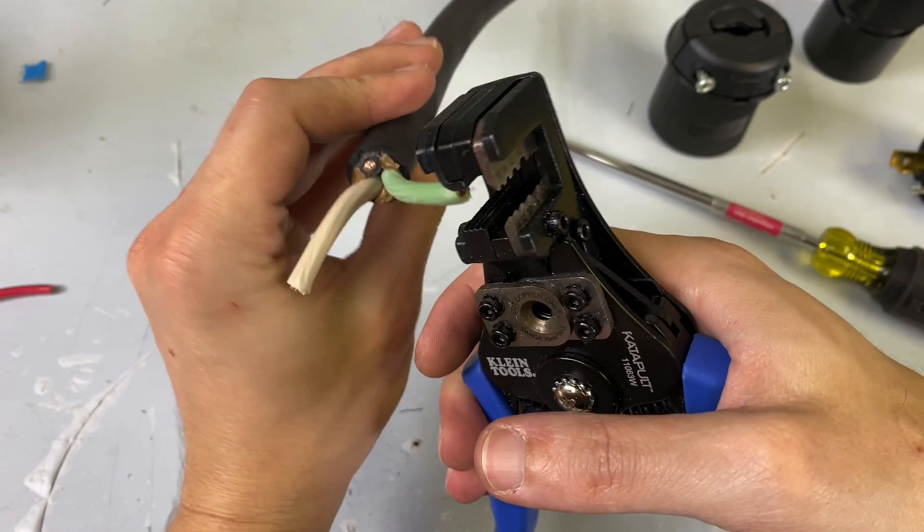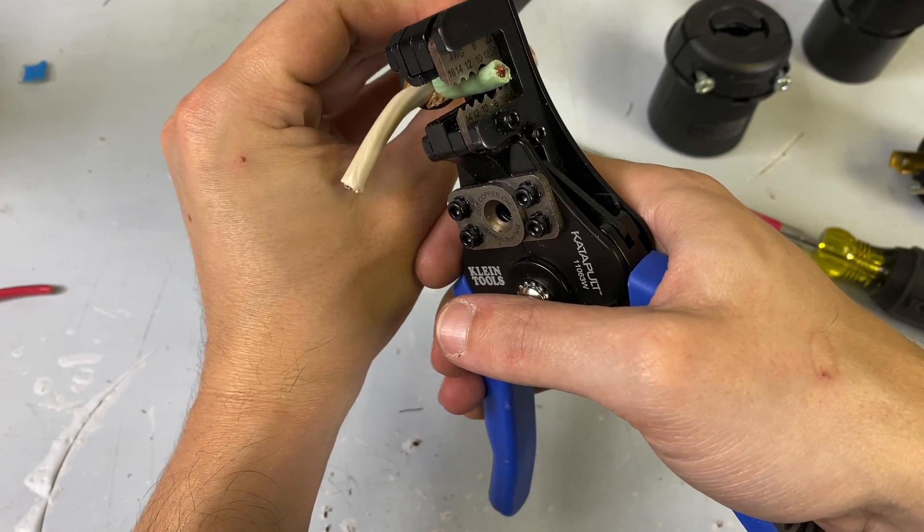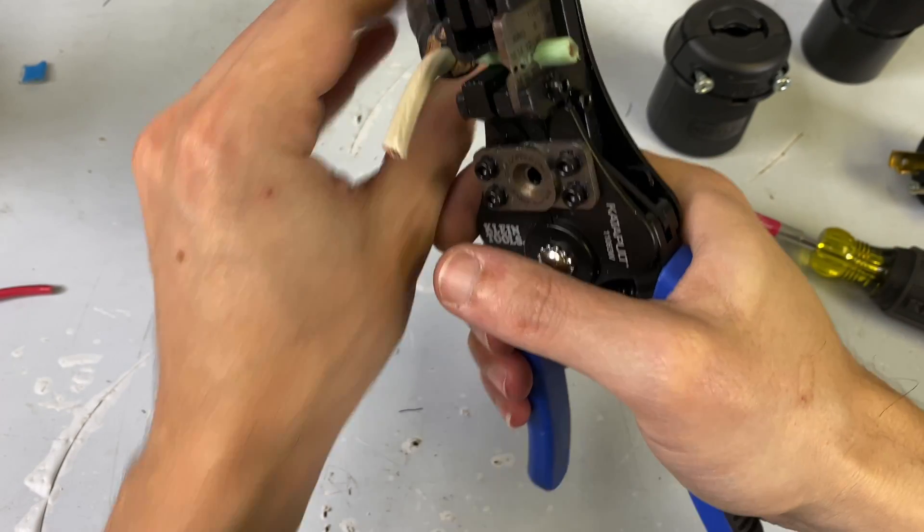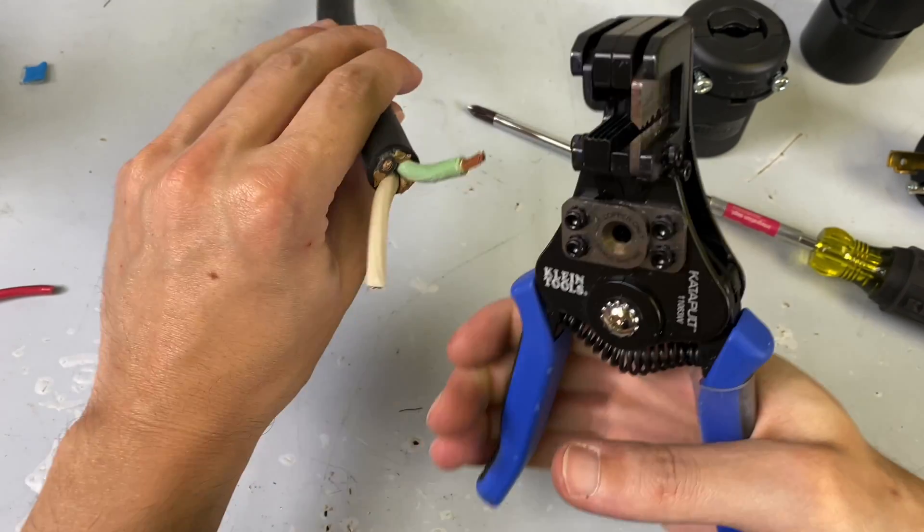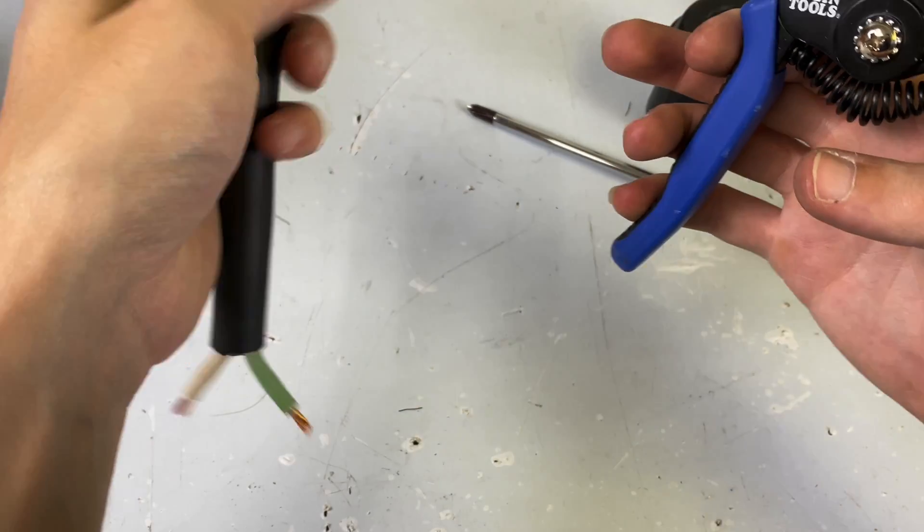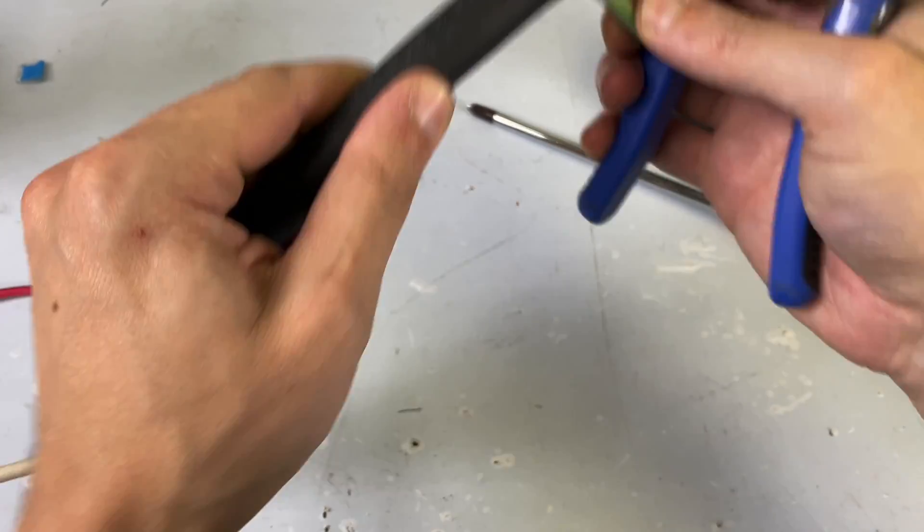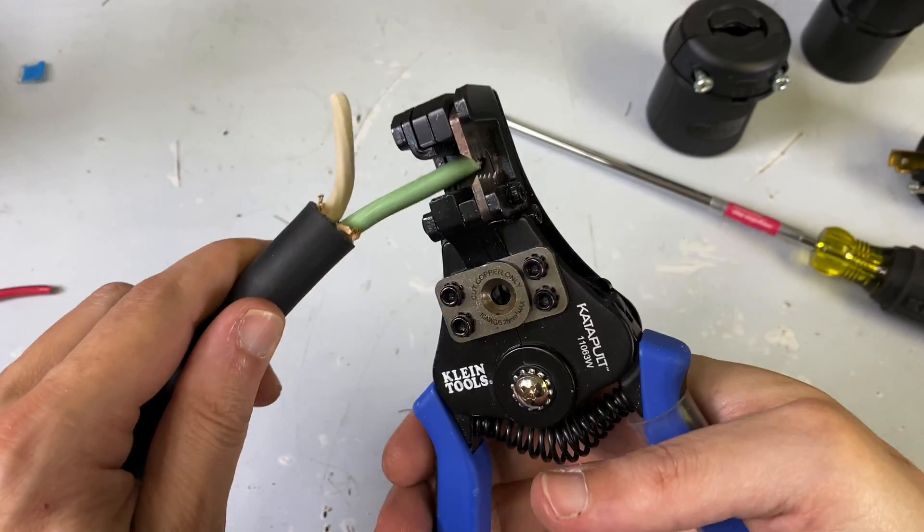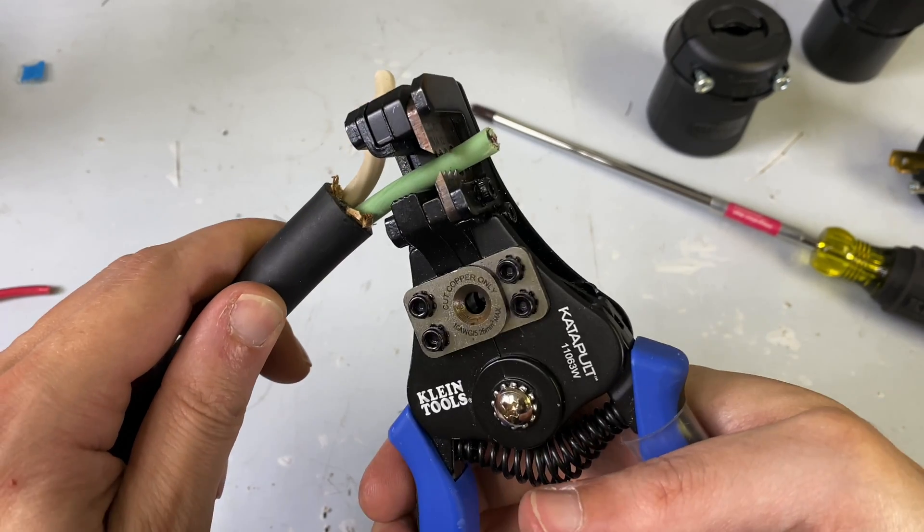This is 10-gauge cable. So I'm just going to take this and strip this back. So for the sake of time for this video, I just stripped back the, I cut the hotline out. So this is just neutral and ground in this cable.